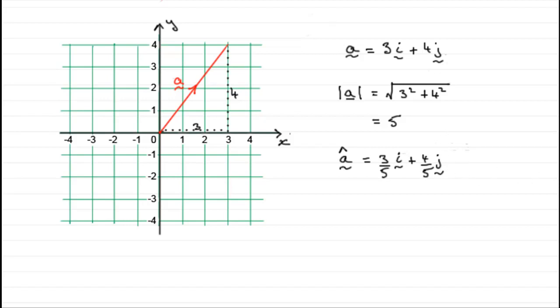And that unit vector would look something like this, where we go 3 fifths of a unit in the i direction and 4 fifths of a unit in the j direction. The length of this is one unit, and you could see that this vector should fit into here 5 times: 1, 2, 3, 4, 5. So there's our unit vector a with a little circumflex on the top of it.